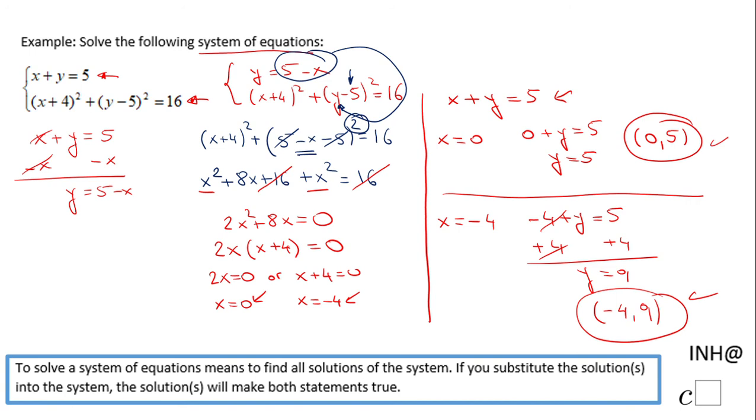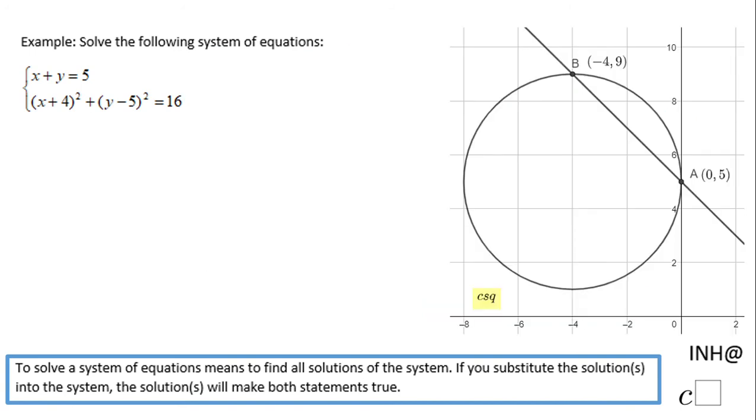You can also see a graphical approach for this problem right here. You notice this is the first equation, the line. This is the second one, which I said is not a line, is a circle. We have these two intersection points which are the solutions of this system of non-linear equations.